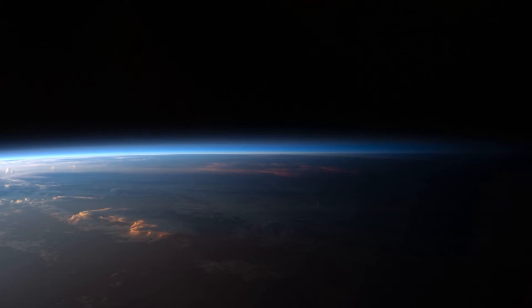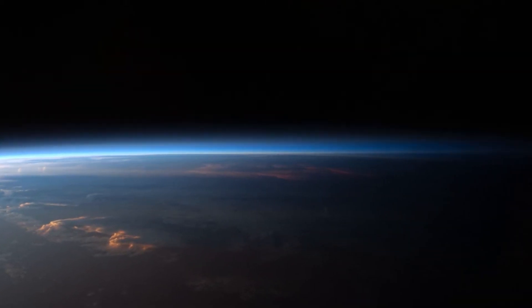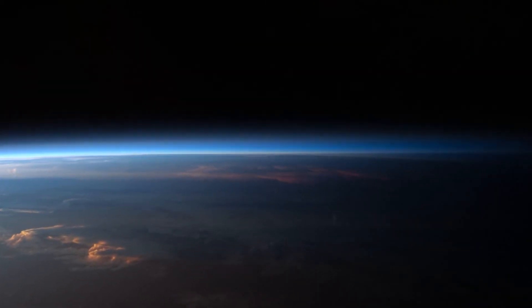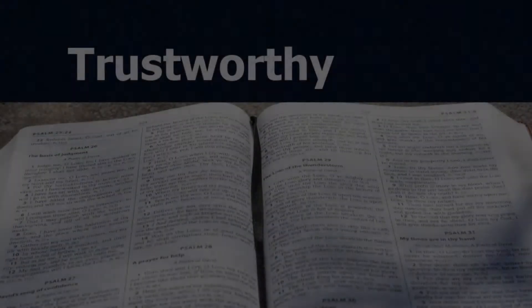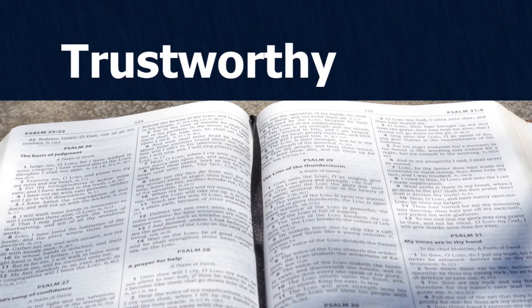"...then will I cast away the seed of Jacob and David my servant." So God is saying to his people: look, I'm a consistent, covenant-keeping God. You can see that in what I am holding together all around you, and I will be just as faithful to my covenant with you. You can rely on what God says — that's math's message.